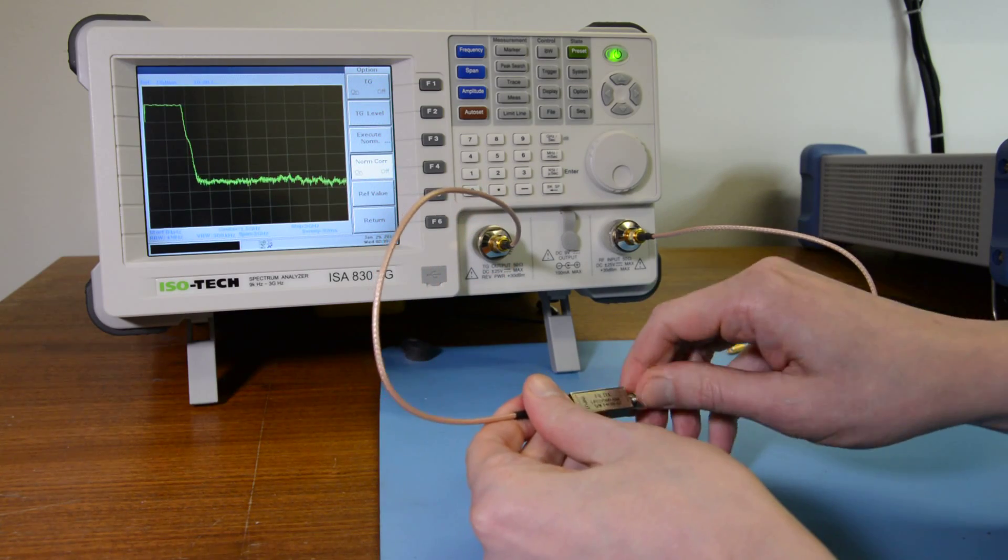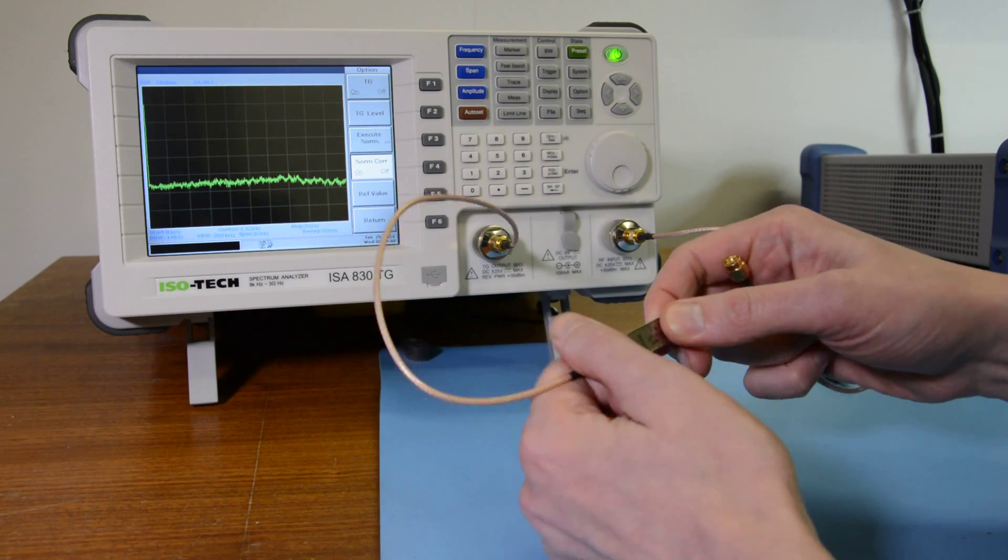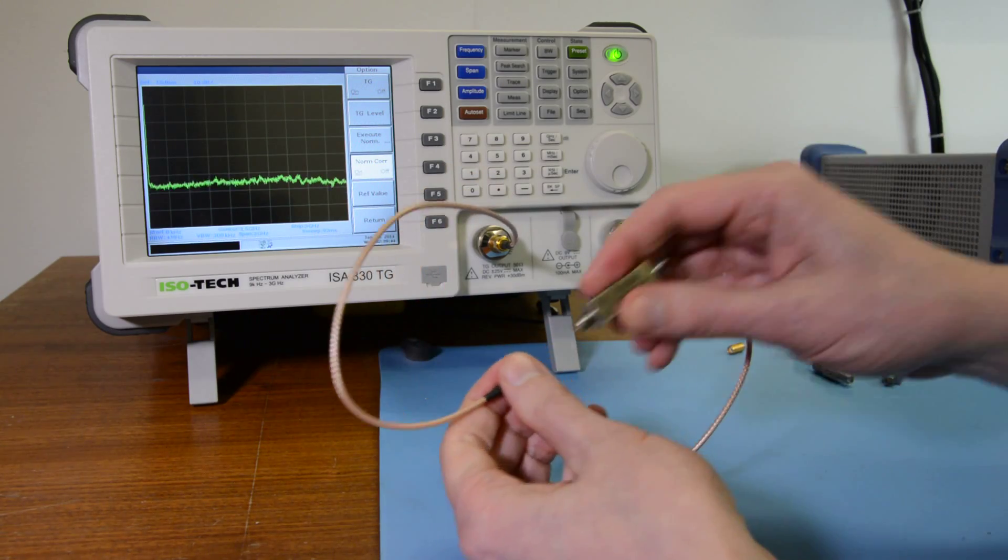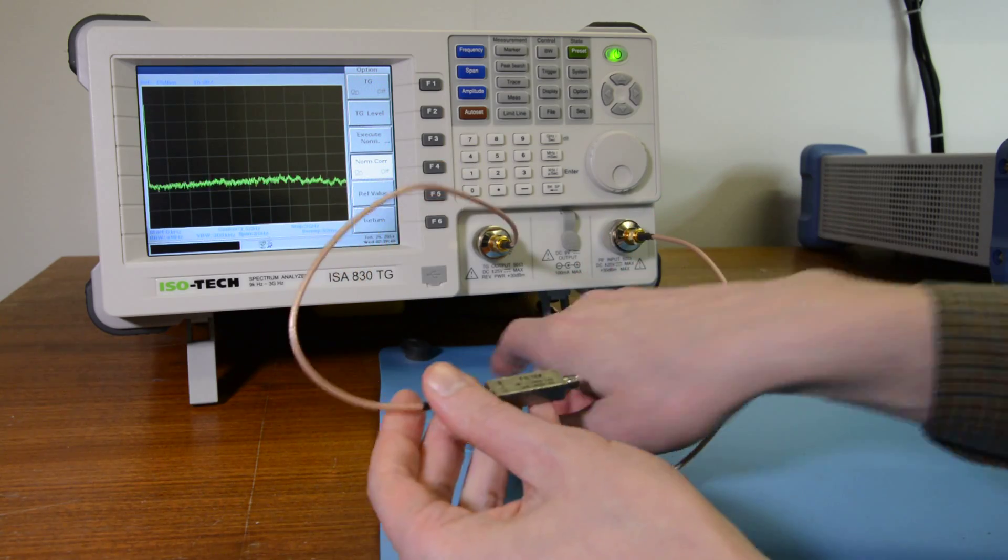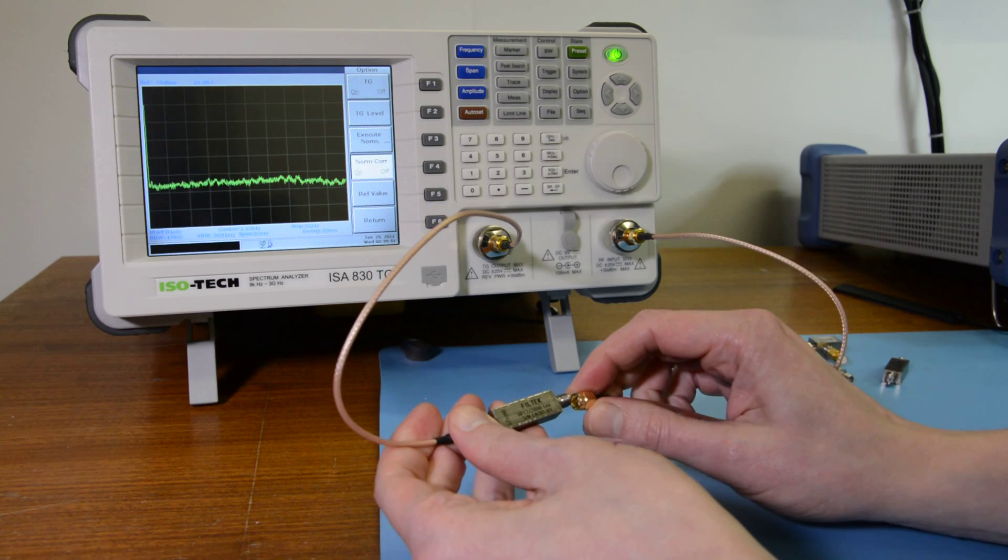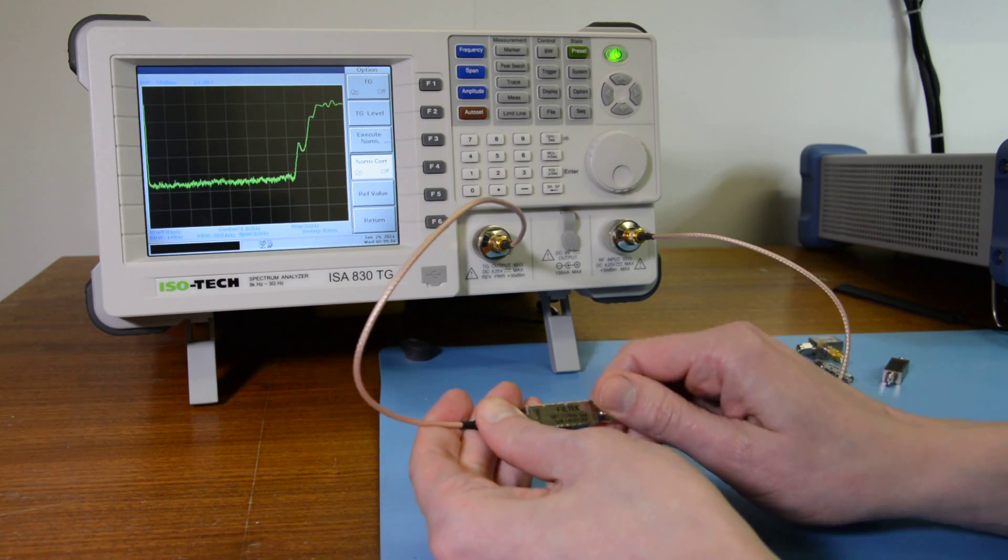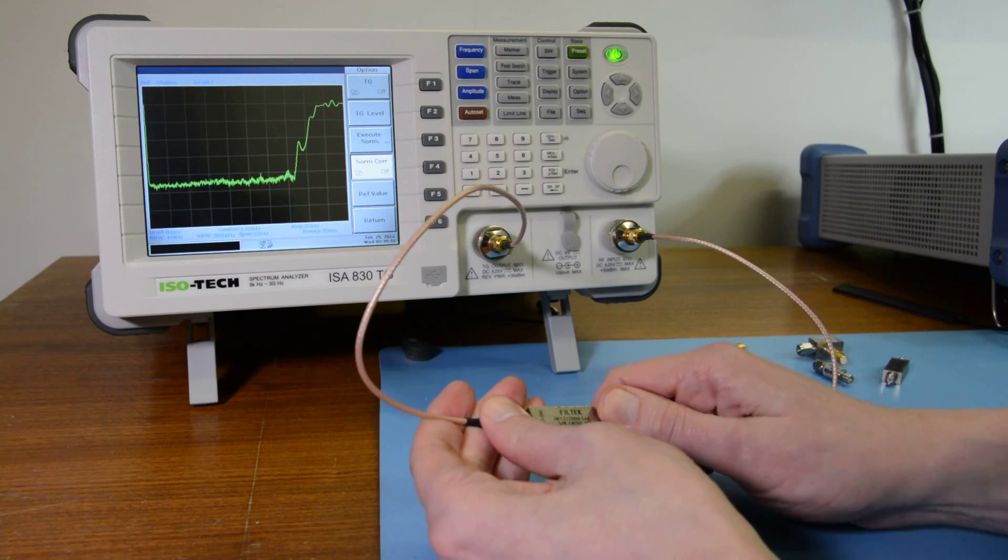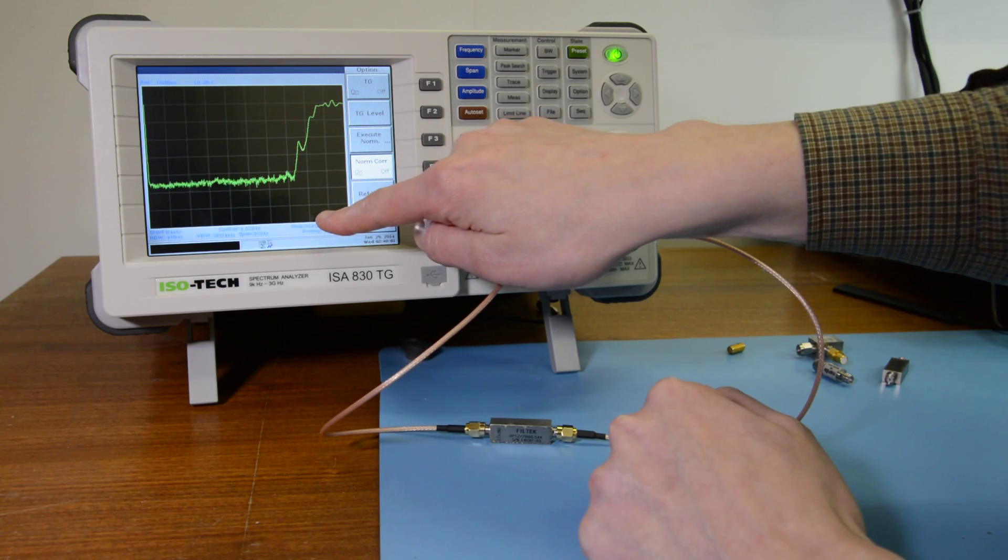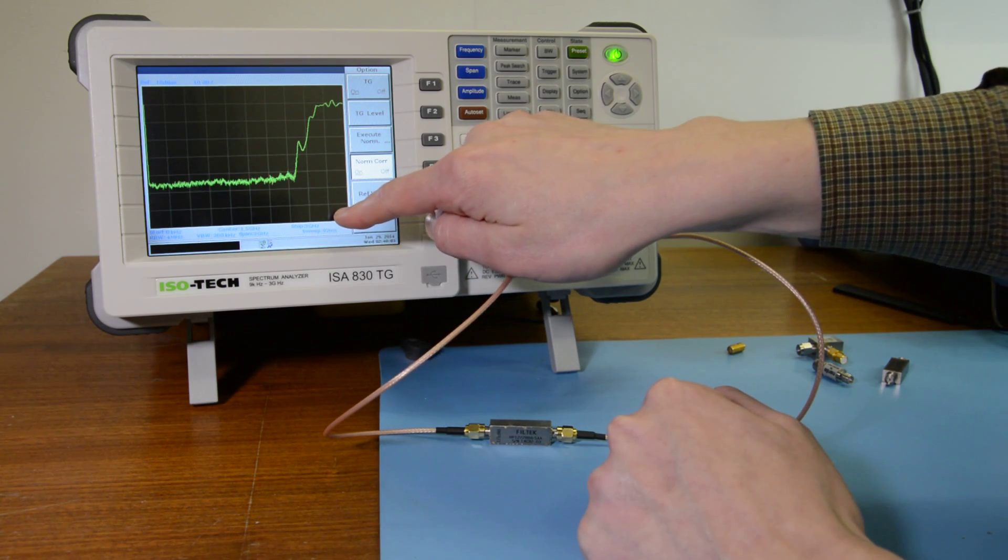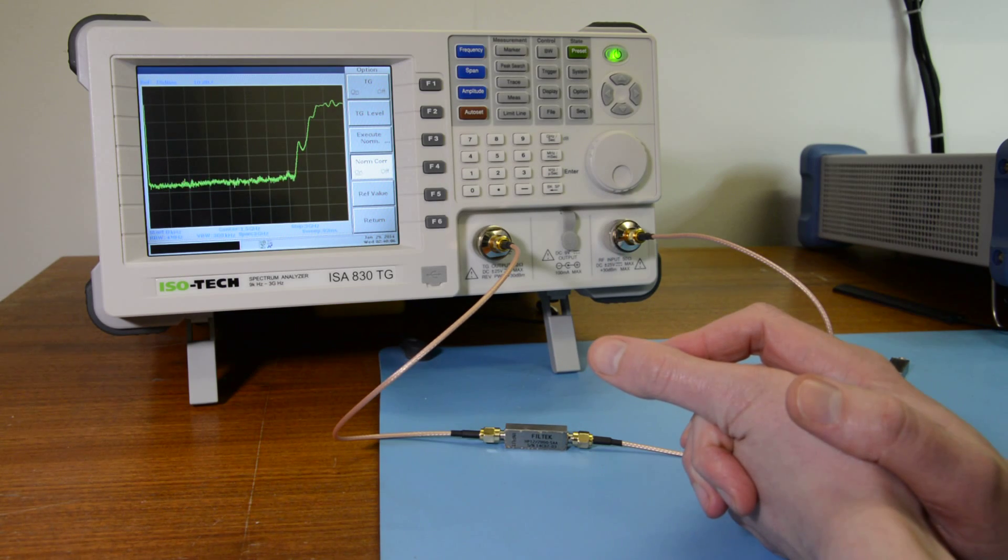If we try a high pass filter. This is a 2.8 GHz high pass filter. Each division is 300 MHz, so we can see attenuation below 2.7 GHz there. It's starting to drop off.